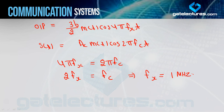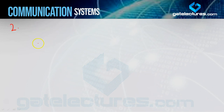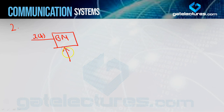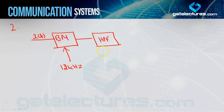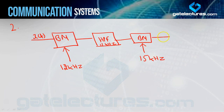Now for the second question: a block diagram is given. The input is x(t) going into a balanced modulator with an applied frequency of 12 kHz. The next block is a high pass filter with cutoff frequency 12 kHz. Then there is another balanced modulator using a frequency of 15 kHz, and the output is y(t).